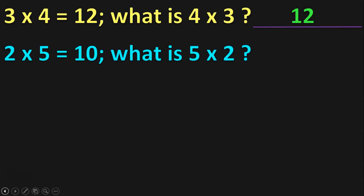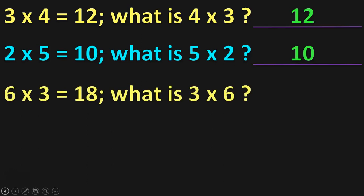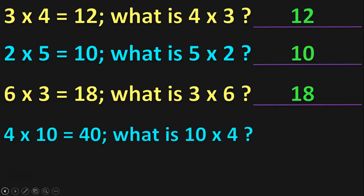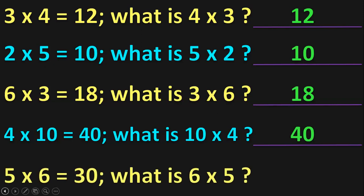2 into 5 is equal to 10. What is 5 into 2? 5 into 2 is also equal to 10. As the children are familiar with tables, they can quickly revise their tables and check — 5 into 2 is 10. Next, 6 into 3 is equal to 18. What is 3 into 6? 3 sixes are 18, so this also satisfies the order property of multiplication. 4 into 10 is equal to 40 — what is 10 into 4? 10 into 4 is also equal to 40. Next, 5 into 6 is equal to 30 — what is 6 into 5? 6 into 5 is also equal to 30.